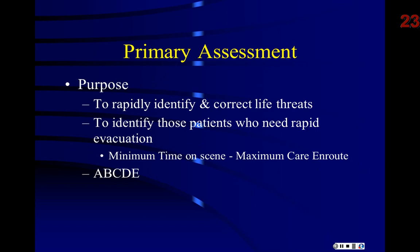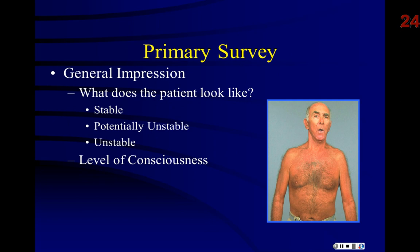The way to remember primary assessment is A, B, C, D, E. D and E are flexible; A, B, C are not. My general impression: as I'm approaching from across the room, what does the patient look like? Are they stable or potentially unstable? What's their level of consciousness — do they look at me when I walk in? Do they track me? Are they kind of out of it, or laying there unresponsive?